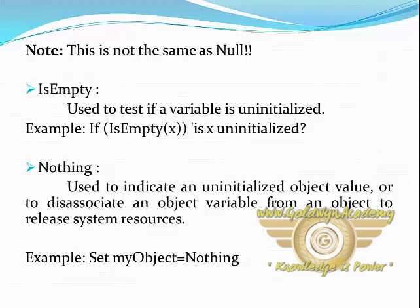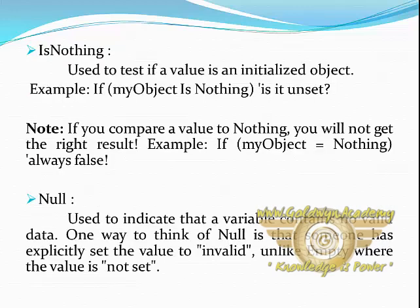Nothing. It is used to indicate an uninitialized object value, or to disassociate an object variable from an object to release system resources. Example: set myObject = nothing. It is used to test if a value is an uninitialized object. Example: if myObject is nothing, it is unset.